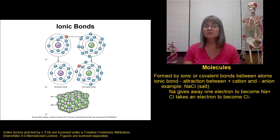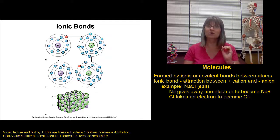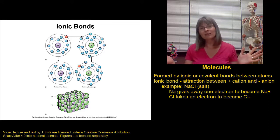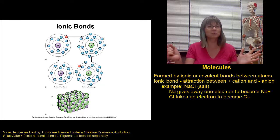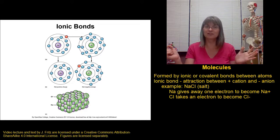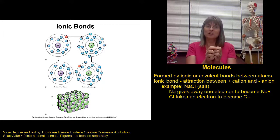In the case of sodium, which is way over on the left-hand side of the periodic table, it likes to give away that one lone electron that it has. Chlorine, all the way over on the other side of the periodic table, has an almost full shell of electrons and would really like an electron. It will take that electron released by the sodium. So now sodium has a positive charge and chlorine has a negative charge, and they're attracted to each other and form sodium chloride.